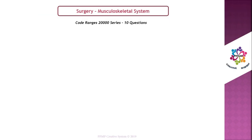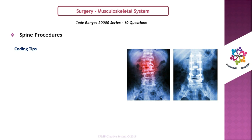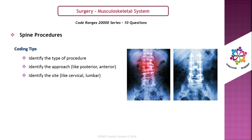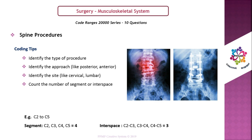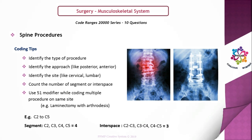Spine procedures: whatever the spine procedure, you can answer very easily based on these coding tips, which also apply to the six-series spine procedures. Identify the type of procedure; identify the approach — posterior or anterior; identify the site such as cervical or lumbar; count the number of segments or interspaces. Example: C2 to C5 — for segments, split as C2, C3, C4, C5 = 4 segments; for interspaces, split as C2–C3, C3–C4, C4–C5 = 3 interspaces. Use modifier 51 when coding multiple procedures at the same site, for example laminectomy with arthritis.